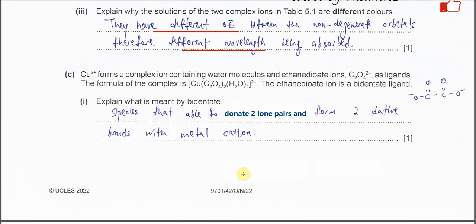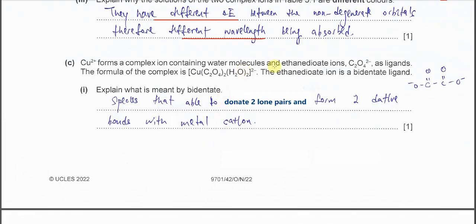Part C. Copper(II) forms a complex ion containing water molecules and ethanedioate ions (oxalate ions), which is a bidentate ligand. The formula of the complex is copper with two bidentate ligands and two H2O. Part 1: Explain what is meant by bidentate. Bidentate means the species that's able to donate two lone pairs and form two dative bonds with the metal cation.